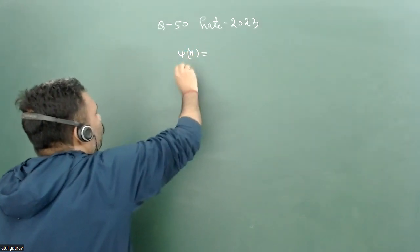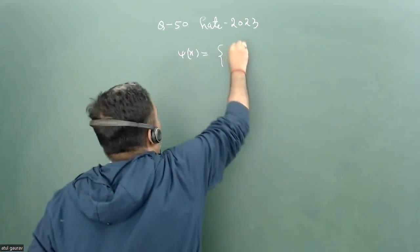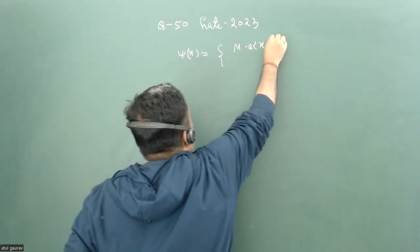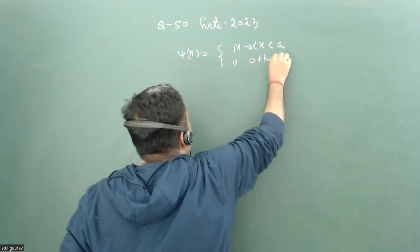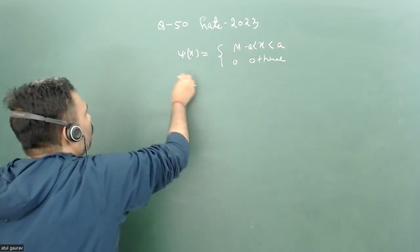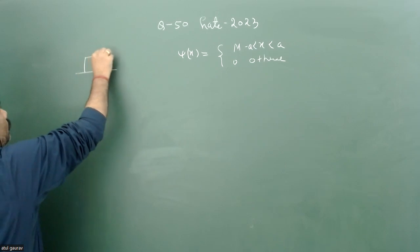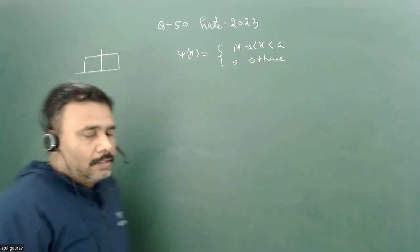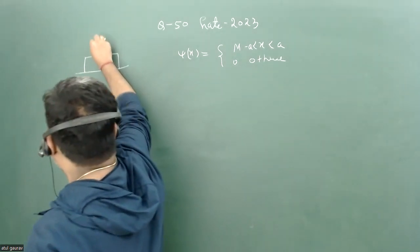There is a state ψ(x) given as some value m when x is between minus a to plus a, and zero otherwise. If we go to plot this particular ψ(x), it looks like a rectangular step function — this is ψ(x) versus x.